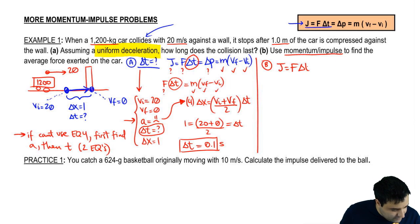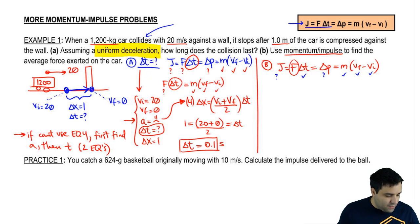So find the average force. J equals F delta t, delta p, m v final minus v initial. I want the force. I know the time, and I know these three things. I don't know J, I don't know delta p. So the best way to do it is to just set this side equal to this side. F delta t equals m v final minus v initial. V final is zero, so this really just becomes m v initial with a negative there, right?